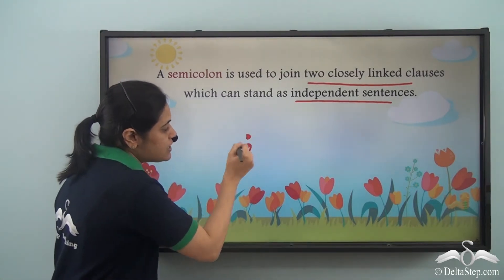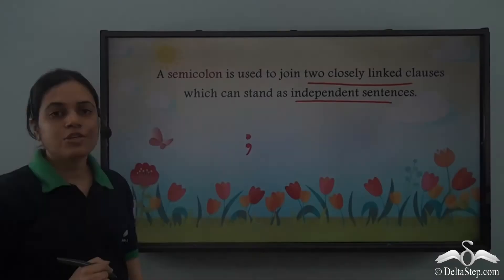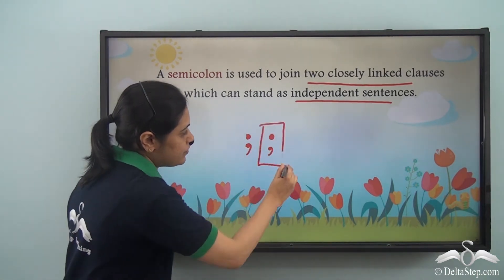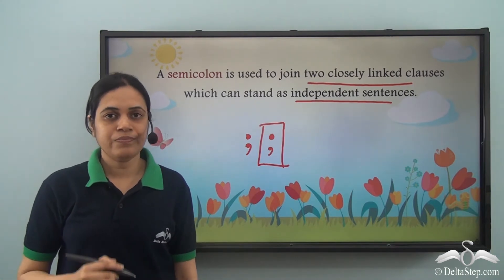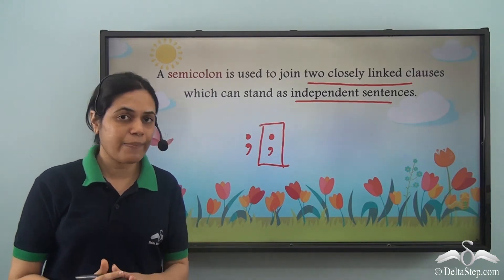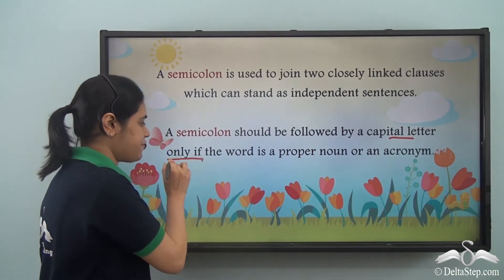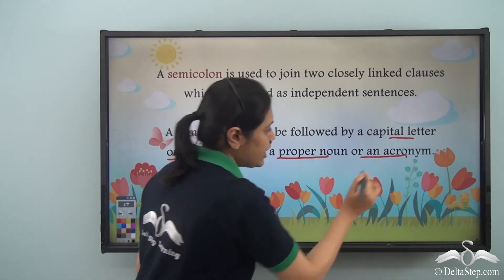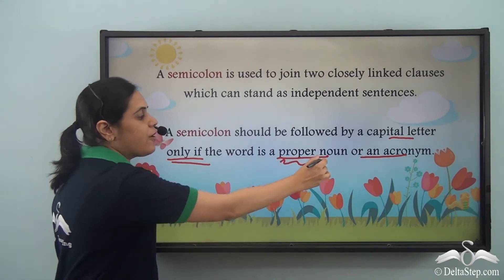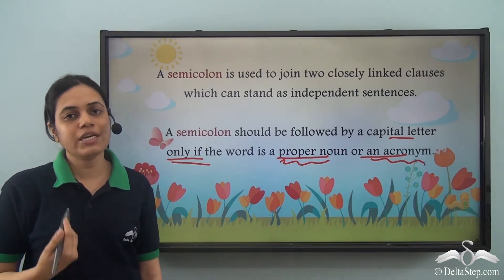This is how a semicolon looks like. It is a combination of a full stop and a comma — a full stop at the top and a comma at the bottom. It comes in the middle of a sentence, so the next letter is not a capital letter but a small letter. A semicolon should be followed by a capital letter only if the word is a proper noun or an acronym.